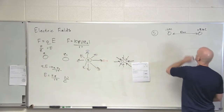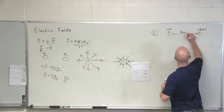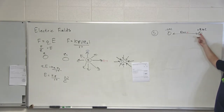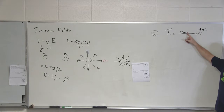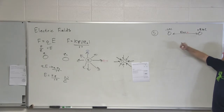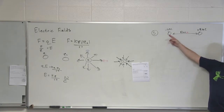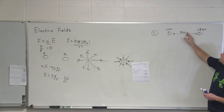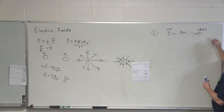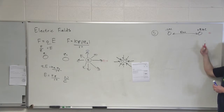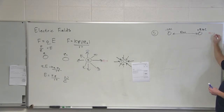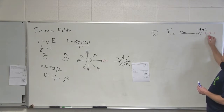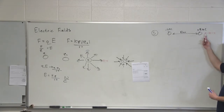Going back — if I put a little positive test charge right in the middle of the x-axis, what direction would the electric field point due to the negative one microcoulomb charge? To the left. And what direction would the electric field point due to the positive nine microcoulomb charge? Also to the left. Is there any way those add up to zero? Not at all. So anywhere in between these two charges, the electric field could never be zero.